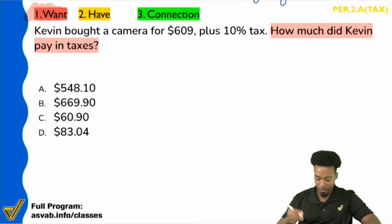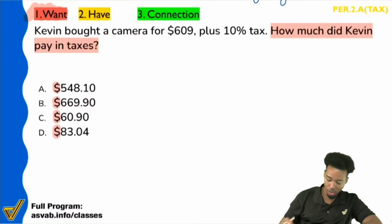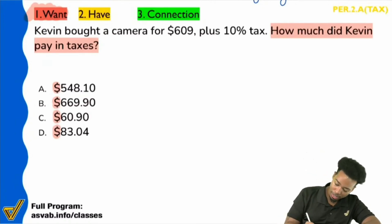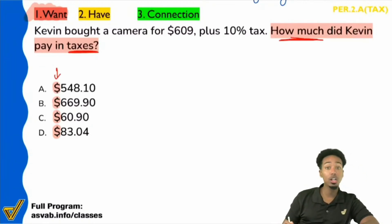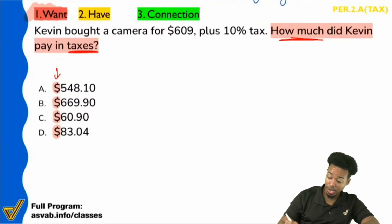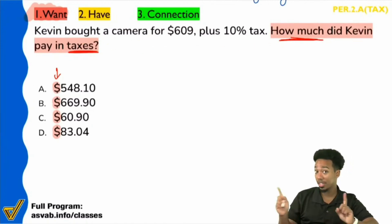So if you look at your answer choices, notice that those are dollar signs. So it looks like what we're looking for here is the taxes — how much in taxes, we have a dollar amount. Is it understandable that the question says 'how much did Kevin pay in taxes'? Notice how it doesn't say 'how much did Kevin pay in total?' Two different things. You have to know what you're looking for.